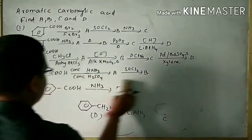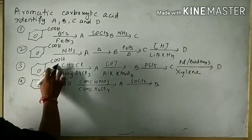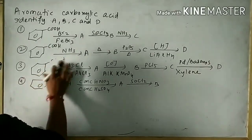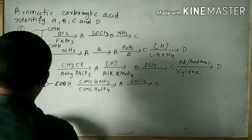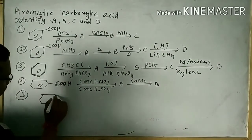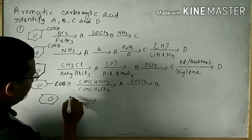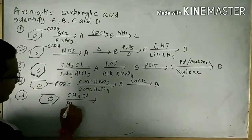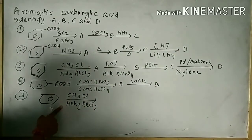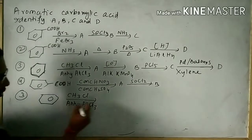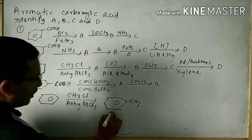Next I will solve question number 3. Your benzene is given. Now benzene is subjected to reaction with CH3Cl in the presence of anhydrous AlCl3 — this is Friedel-Crafts alkylation reaction — and toluene is formed. This is said to be product A.